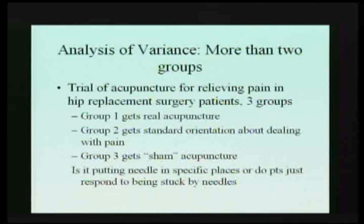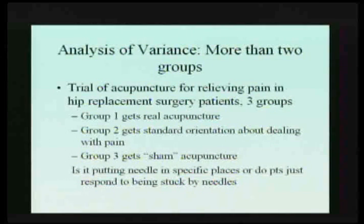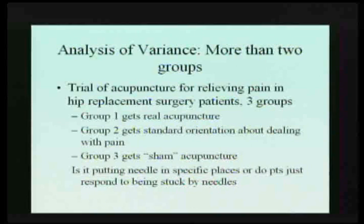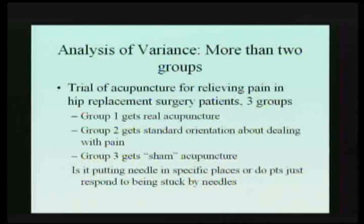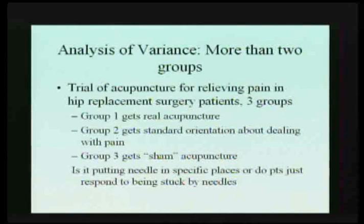A lot of times we work with more than two groups. For example, in my work with the Center for Health and Healing, we do a lot of work with complementary medicine. One study we're doing is looking at acupuncture and lower back surgery — we have three groups. One actually gets acupuncture, another gets a standard orientation about dealing with pain, and another group just gets stuck with needles. The idea is: is there something real about acupuncture, or is it just a strong placebo effect?